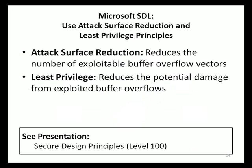Two key design principles prescribed by the Microsoft SDL can be used to reduce the risk from buffer overflow attacks: attack surface reduction and least privilege implementation. Attack surface reduction helps prevent buffer overflow attacks by reducing the possible application vectors that can be exploited. Least privilege takes the approach of conceding that buffer overflow attacks will happen but isolates the potential damage by limiting the privilege level of the overall process being attacked.